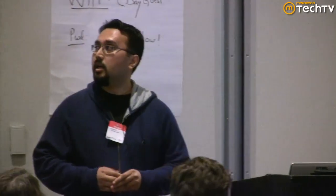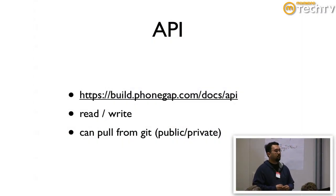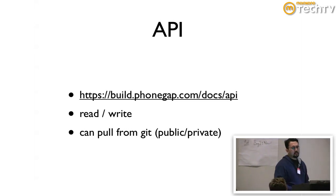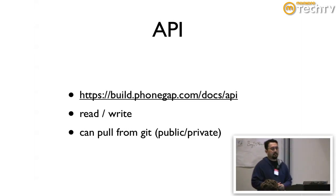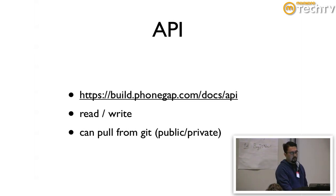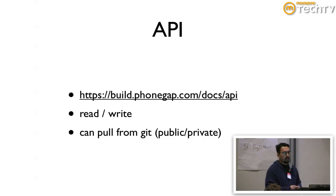We also have an API. It's a read-write API that does almost everything that PhoneGap Build does. You can write apps for it. There's one Windows IDE that's already using the PhoneGap Build API. You can also, through PhoneGap Build, if you have a Git repo that's public or private, we can pull your code automatically.